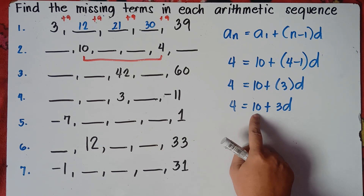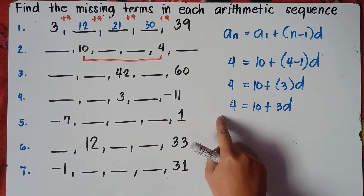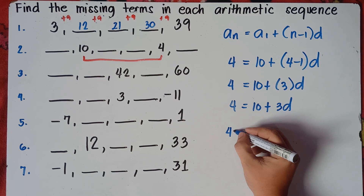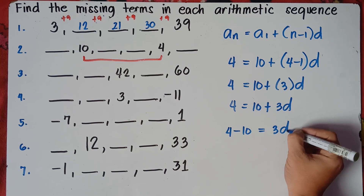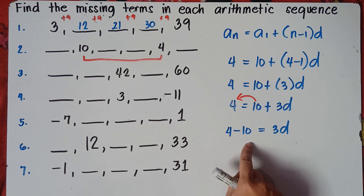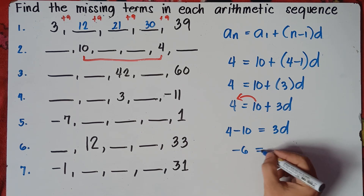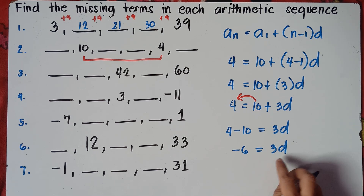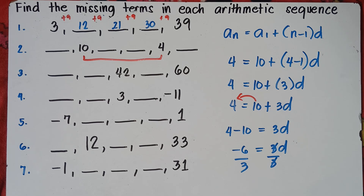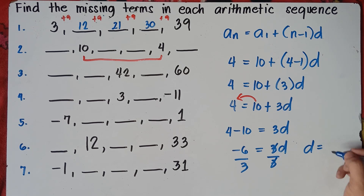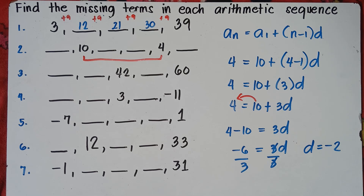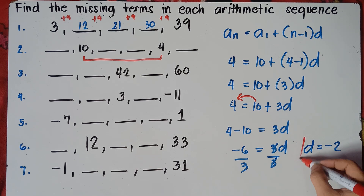To get the value of d, transpose 10 from right to left. This is positive, so it will become negative 10. So 4 minus 10 equals 3d. Always remember to change the sign. 4 minus 10 is negative 6, so negative 6 equals 3d. To get the value of d, divide both sides by 3. Therefore, d equals negative 6 divided by 3, which is negative 2. Our common difference is negative 2.